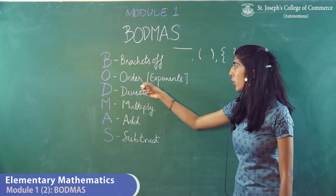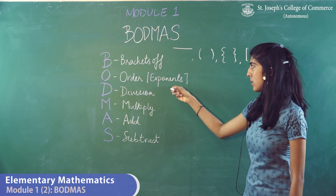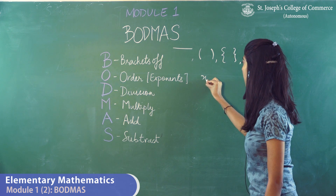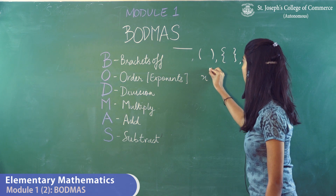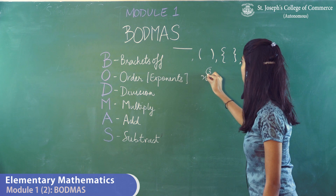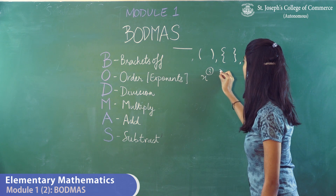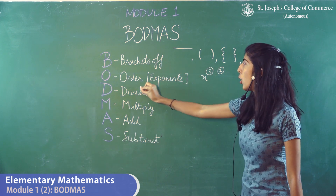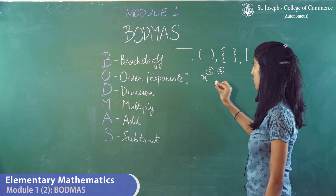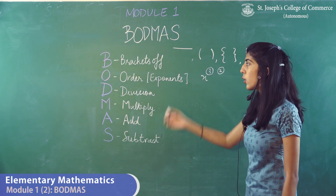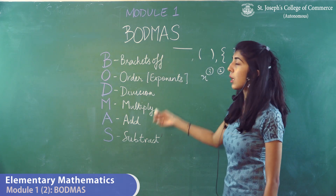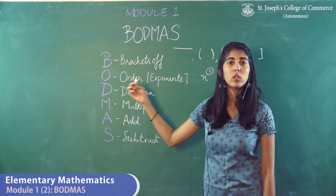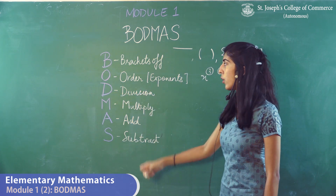O stands for order or exponents. Any variable or number to the power of something, or to the order of something, is called the order or exponents. Under your syllabus, order or exponents do not come under BODMAS, but you need to remember what O stands for.